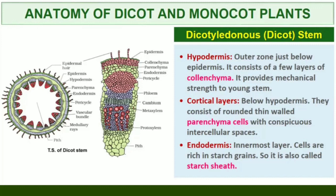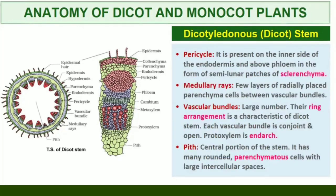Cortical layers below hypodermis consist of rounded thin-walled parenchymatous cells with conspicuous intercellular spaces. The innermost layer of the cortex is called the endodermis. The cells of the endodermis are rich in starch grains and the layer is also referred to as the starch sheath. Pericycle is present on the inner side of endodermis and above the phloem in the form of semi-lunar patches of sclerenchyma. In between the vascular bundles there are a few layers of radially placed parenchymatous cells which constitute medullary rays.